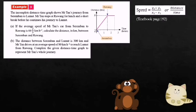Example 8: The incomplete distance-time graph shows Mr. Tan's journey from Seremban to Lumut. Mr. Tan stops at Rawang for lunch and a short break before he continues his journey to Lumut. Part A: If the average speed of Mr. Tan's car from Seremban to Rawang is 66 and 2/3 km per hour, calculate the distance in kilometers between Seremban and Rawang.